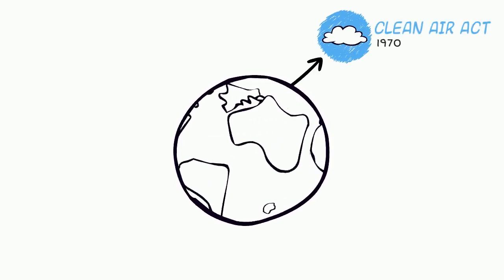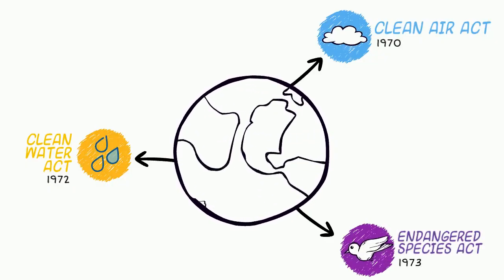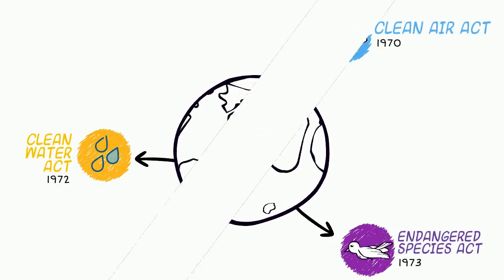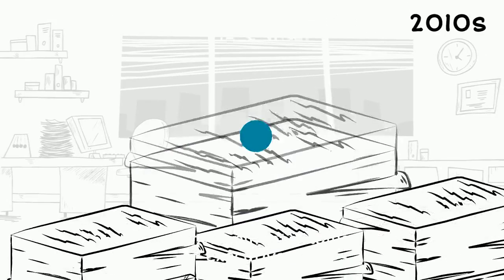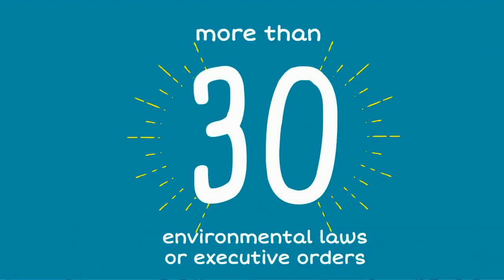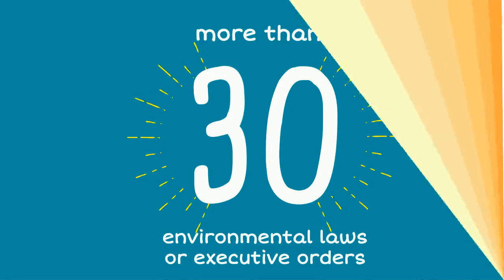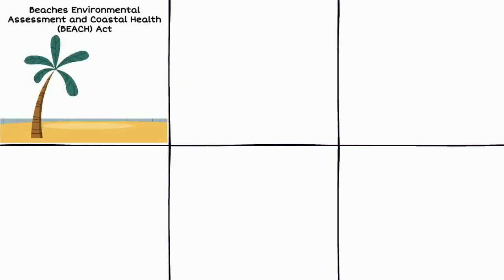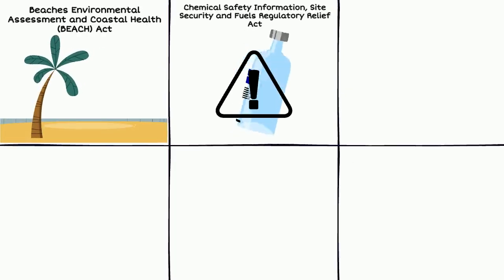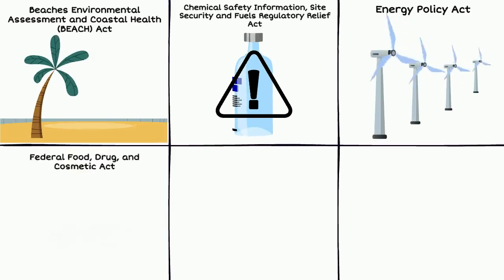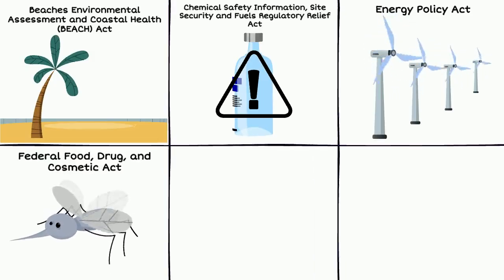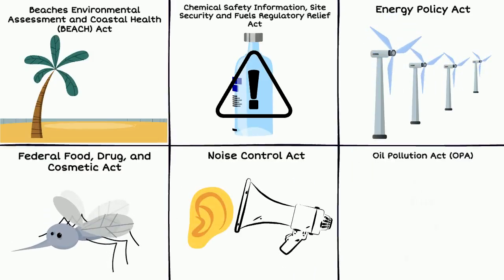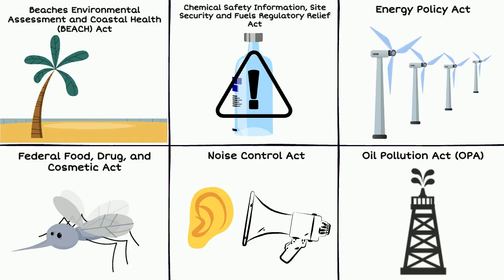In the decades that followed, dozens of notable environmental laws were established. Three of the most well-known were the Clean Air Act, the Clean Water Act, and the Endangered Species Act. After half a century, there are now more than 30 environmental laws or executive orders that the EPA administers — including some you may not know about — that protect the world around you every day. These laws and orders cover everything from beach cleanliness and chemical hazard safety, to efficient energy production, pesticide residues, noise control, oil pollution, and more.